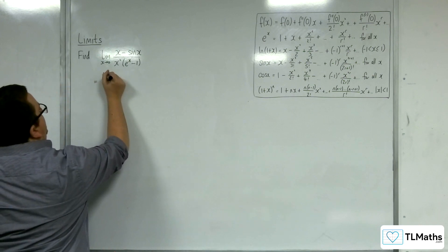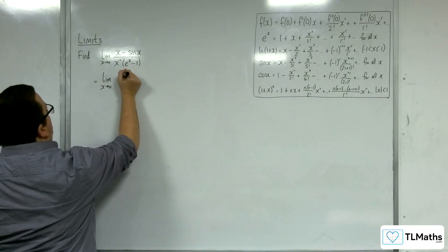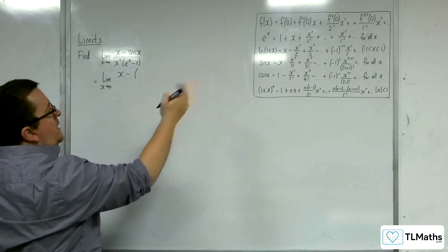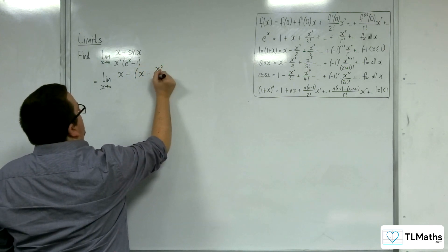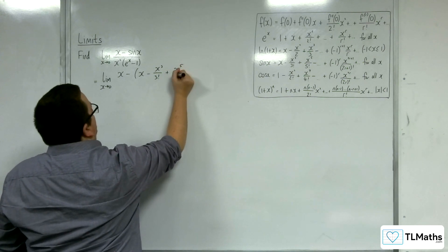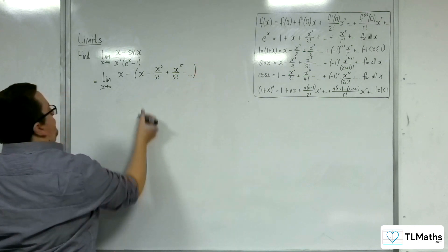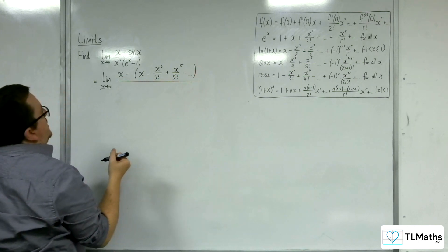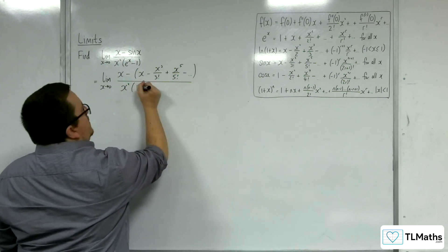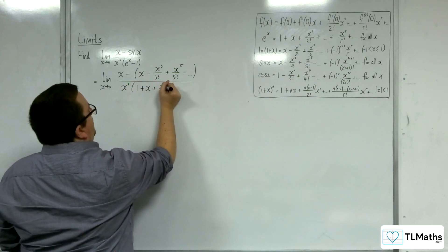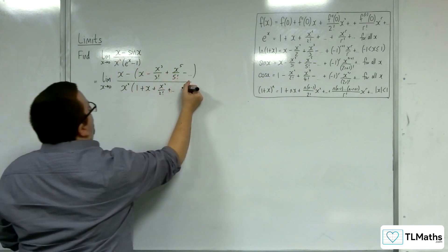So, the limit as x tends to 0. In the numerator we've got x take away sin x. Now, sin x is x take away x cubed over 3 factorial plus x to the 5 over 5 factorial, etc. And in the denominator, we're going to have x squared times by e to the x, which is 1 plus x plus x squared over 2 factorial plus etc., and then we're taking away 1.